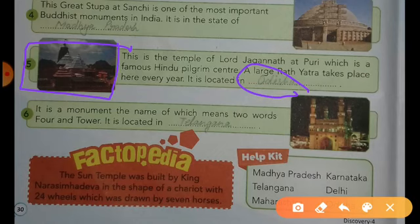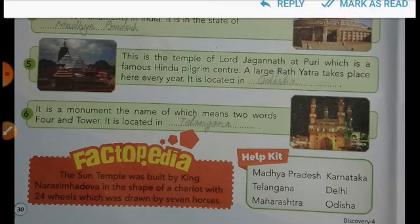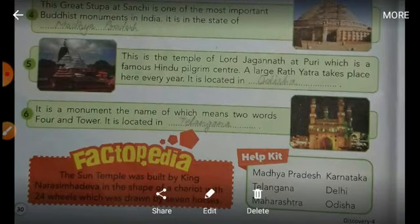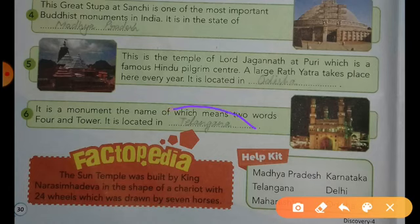Now come to question number 6. It is a monument, the name of which means two words: Tower and Tower. It is located in Telangana. Dear students, you have to fill here: Telangana.